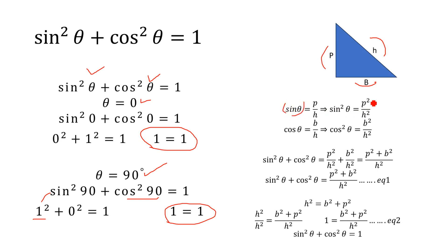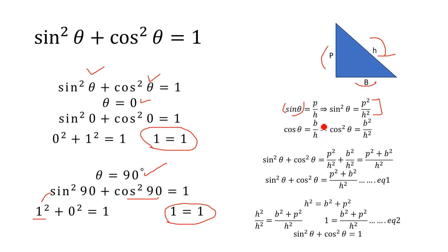So we have sine squared theta equal to perpendicular squared divided by hypotenuse squared. Now according to the definition of cos theta, cos theta is equal to base divided by hypotenuse.